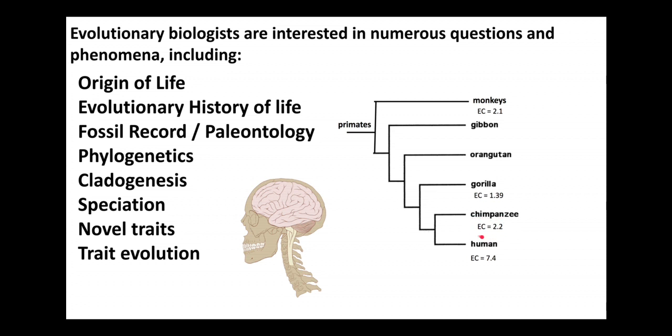So monkeys, gorillas, and chimps all have EC values that are 2.2 or less. So all of these organisms have a similar ratio between the size of their brain and the rest of their body. Humans, however, have a very large encephalization quotient, an EC of 7.4. This is indicative of our very large brains relative to our bodies, and this correlates with our capacity for language, for communication, for being able to communicate vocally, build sophisticated tools, etc.